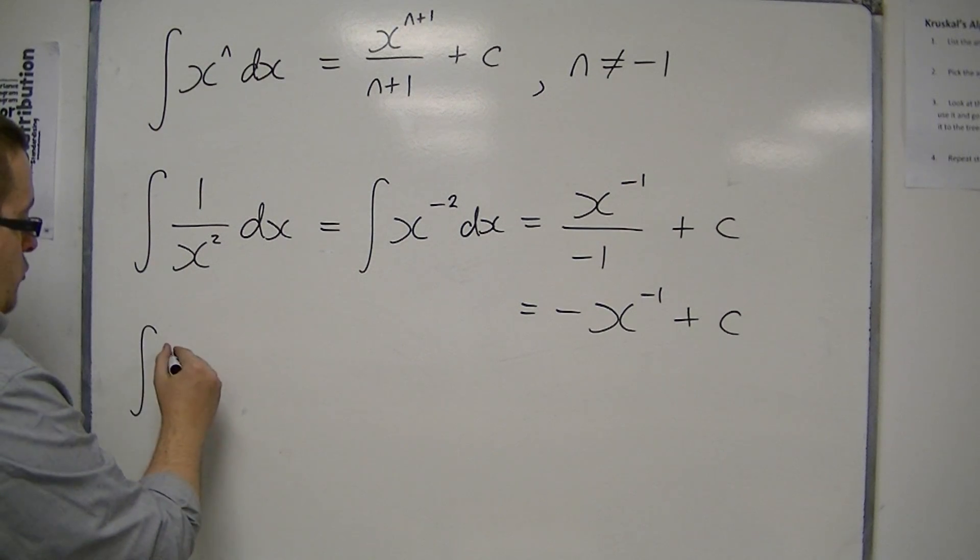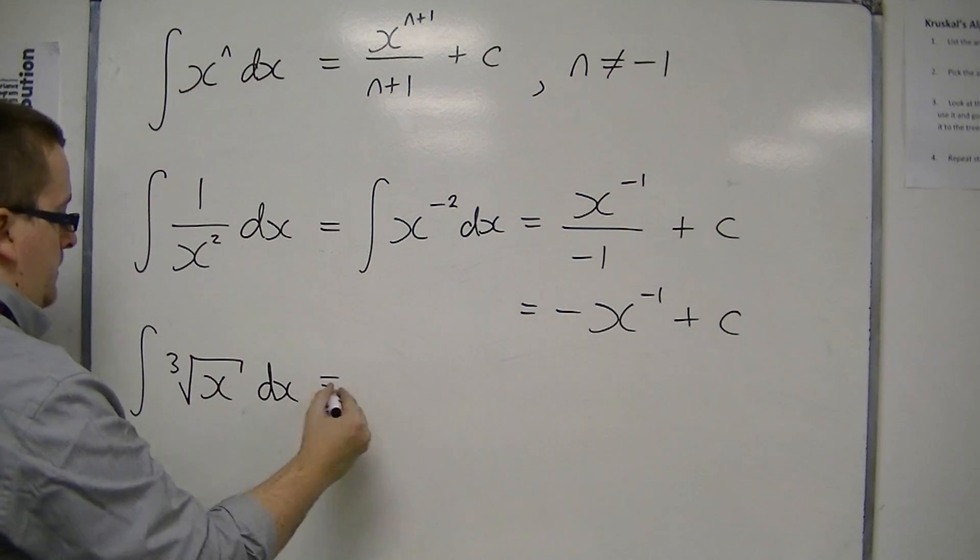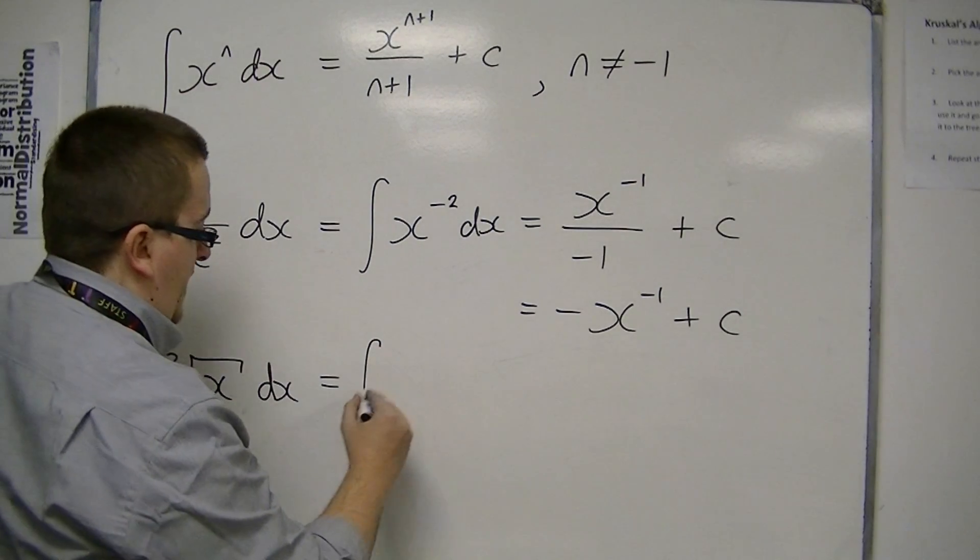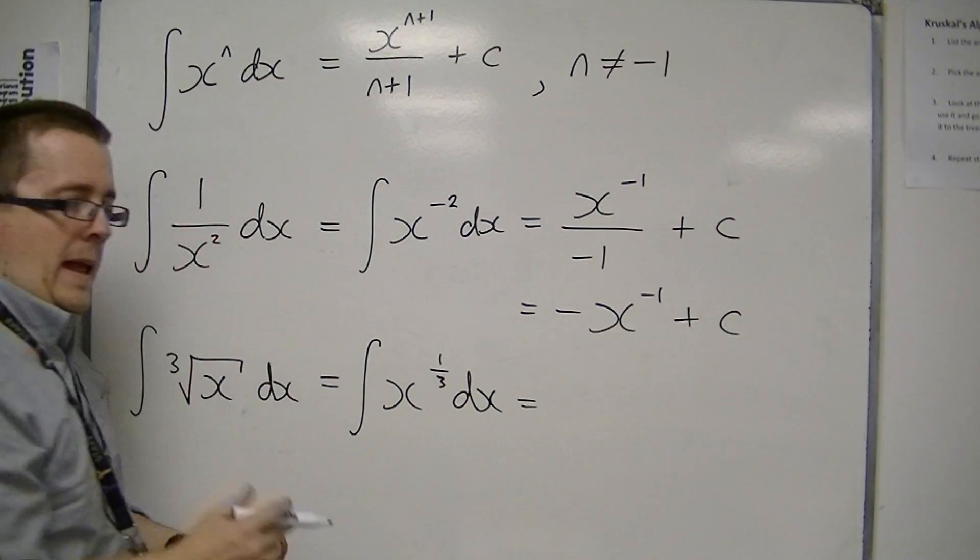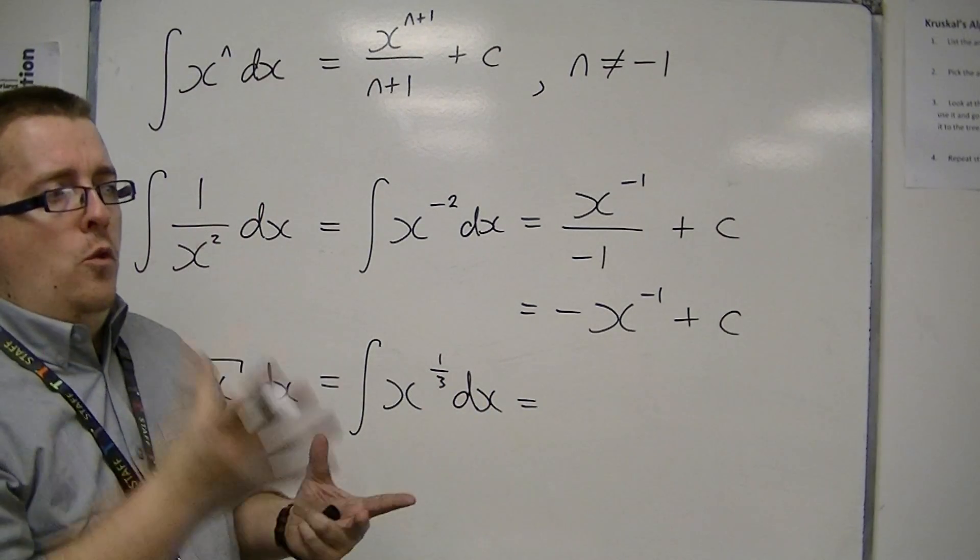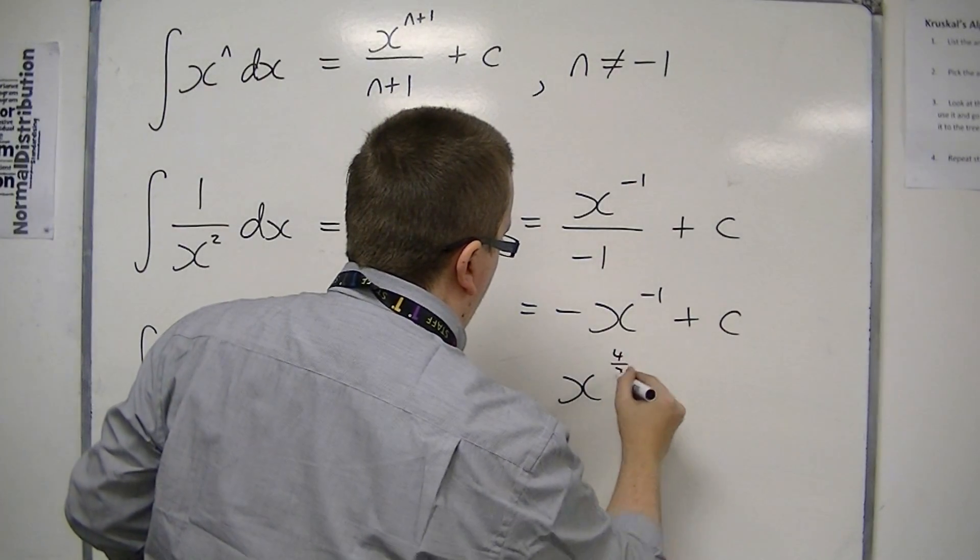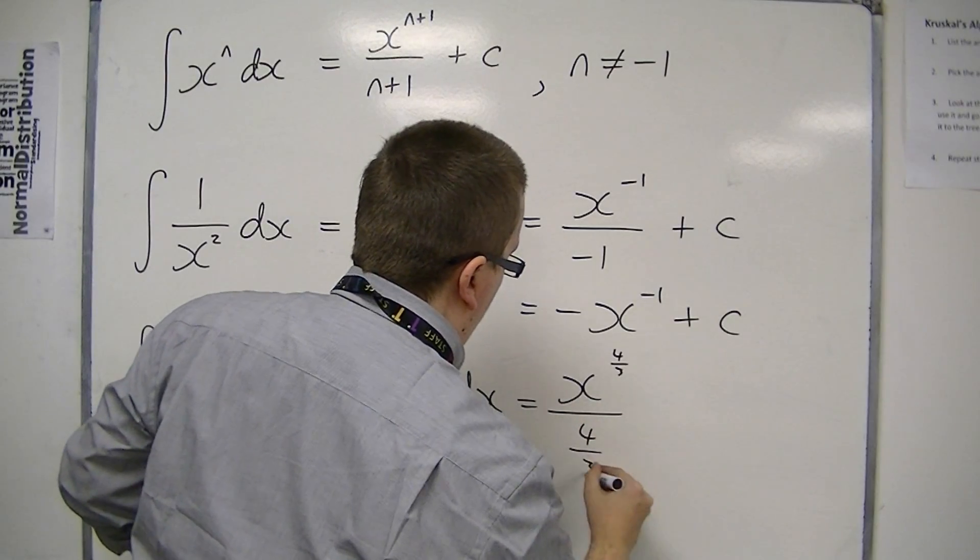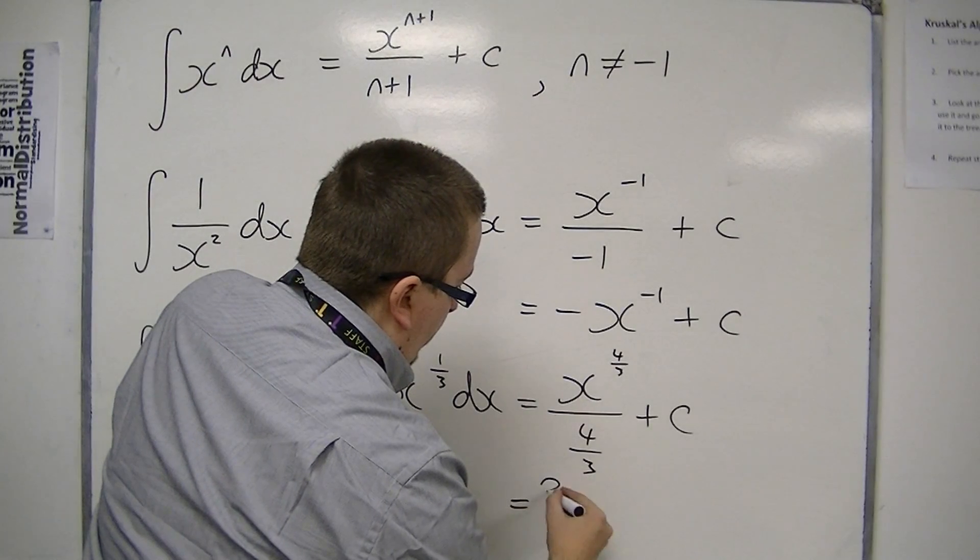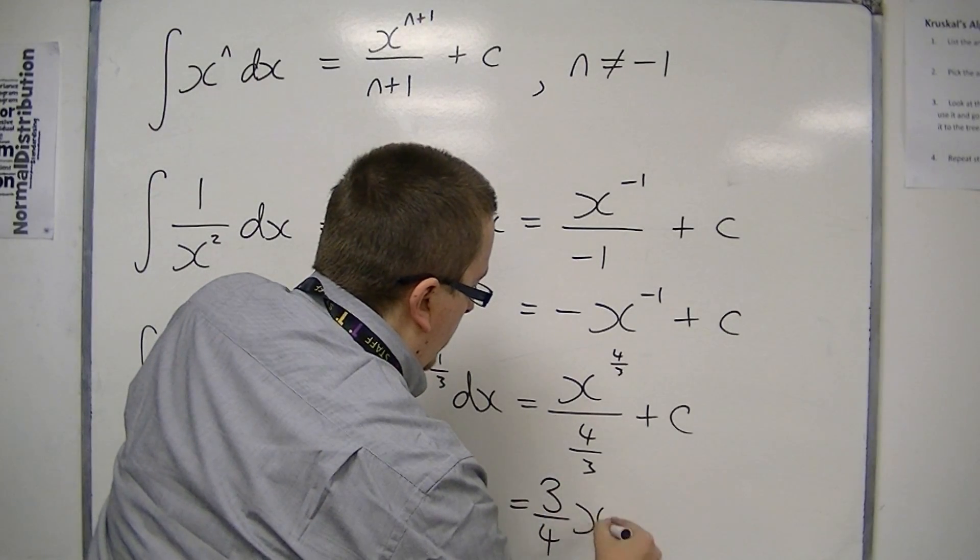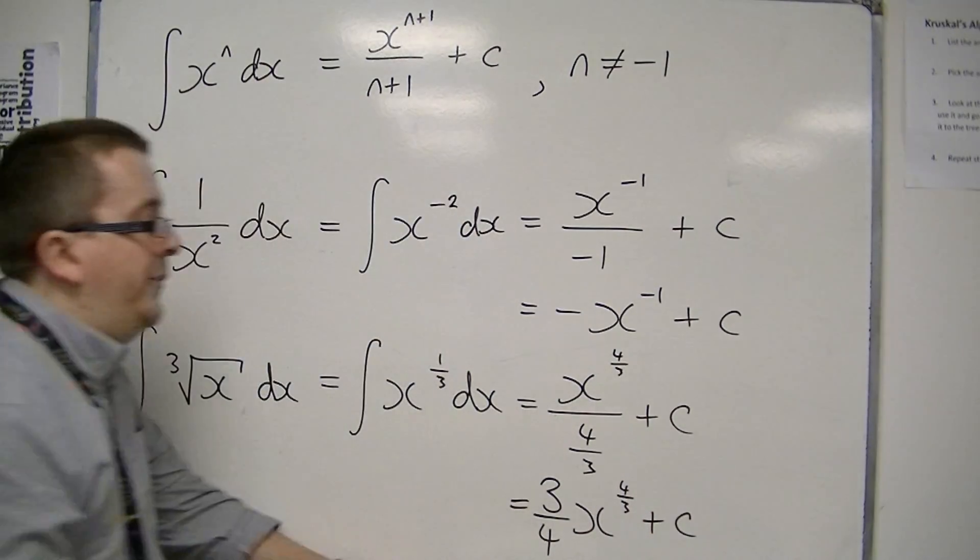Likewise, if I had to integrate the third root of x dx, first of all, write it as a power of x. That's x^(1/3). Add 1 to the power: 1/3 plus 1 is 4/3. And divide by the new power. If you're dividing by 4/3, that's the same as multiplying by 3/4. So that's (3/4)x^(4/3) + c.